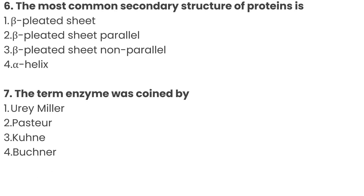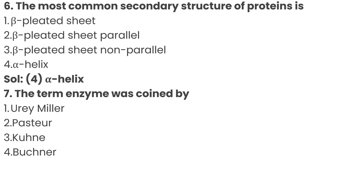Question number 6: the most common secondary structure of protein is? Option 1: beta-pleated sheet, Option 2: beta-pleated sheet parallel, Option 3: beta-pleated sheet non-parallel, Option 4: alpha-helix. The correct answer is Option 4: alpha-helix.